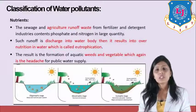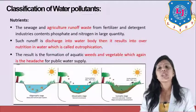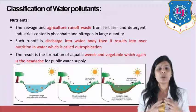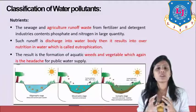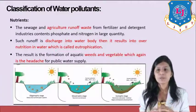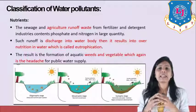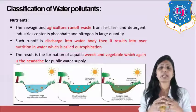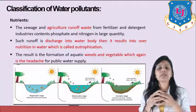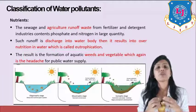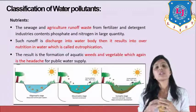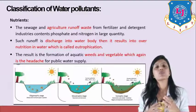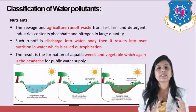Another form of water pollutant is nutrients. Sewage and agricultural runoff, as well as waste from fertilizer and detergent industries, contain large quantities of phosphate and nitrogen. When excessive amounts enter a water body, it causes over-nutrition called eutrophication, which results in the formation of aquatic weeds and vegetation — a problem for public water supply. Eutrophication will be discussed in detail in the next lecture.